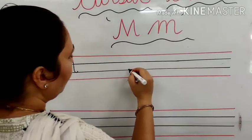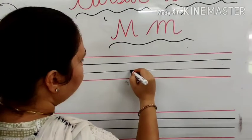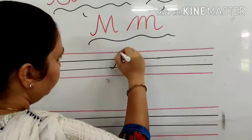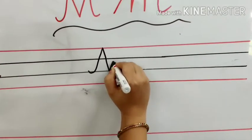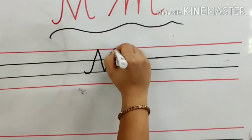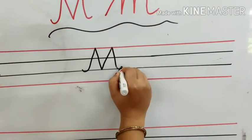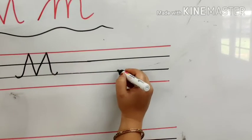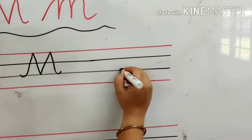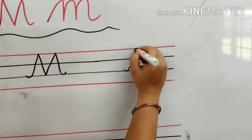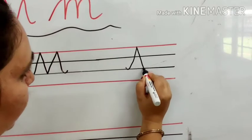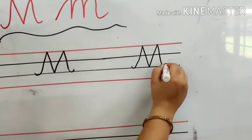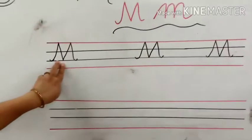Again see. We will start from the third line. Go up, come down. Again go up and come down. We will draw a slant line, come down, touch the third line, again go up and come down. This is called capital cursive M.